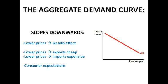It's really important to get your labels right on the axis. It's price level and real output. You could put a pound sign instead of price level. Don't just put 'price', because it's the price of all of the goods and services in the economy.